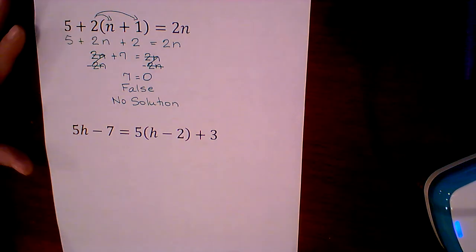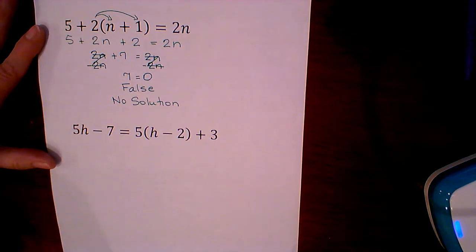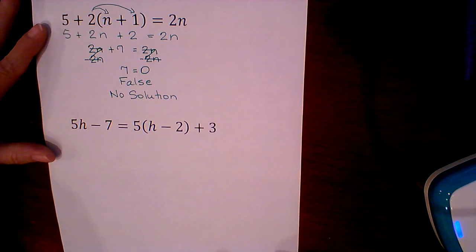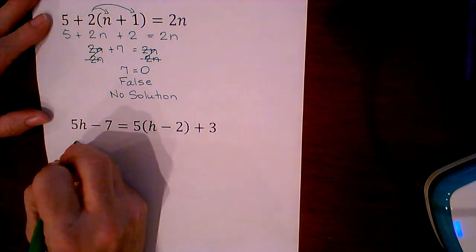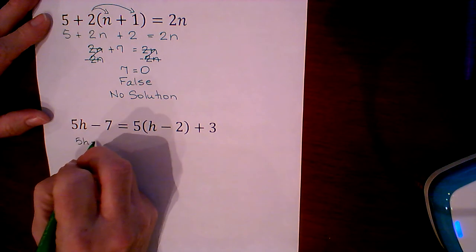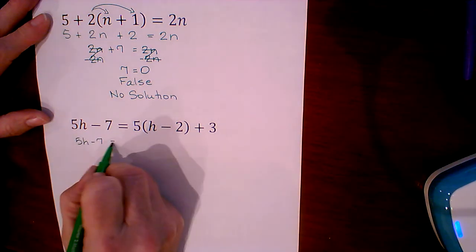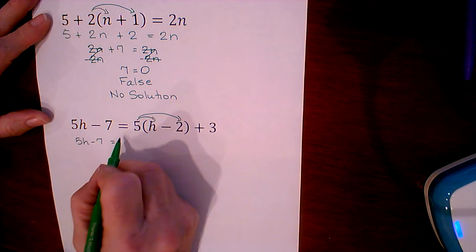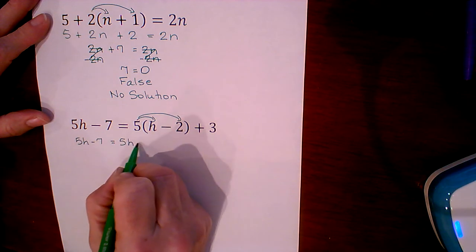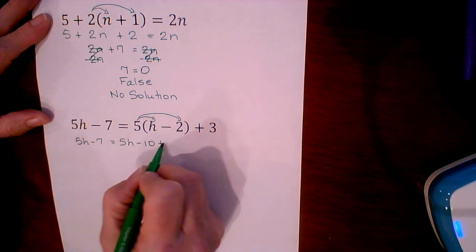Our second example is 5h minus 7 equals 5 times the quantity h minus 2 plus 3. The left-hand side is already simplified. We do need to distribute on the right-hand side, so when we distribute the 5, we end up with 5h minus 10 plus 3.